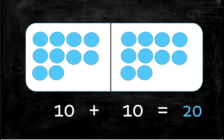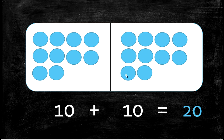And our last double is 10 plus 10 equals 20. We have 1, 2, 3, 4, 5, 6, 7, 8, 9, 10 here and the same amount here — they look the same. So 10 circles here plus 10 circles here — let's count all of them: 1, 2, 3, 4, 5, 6, 7, 8, 9, 10, 11, 12, 13, 14, 15, 16, 17, 18, 19, 20. 10 plus 10 equals 20.